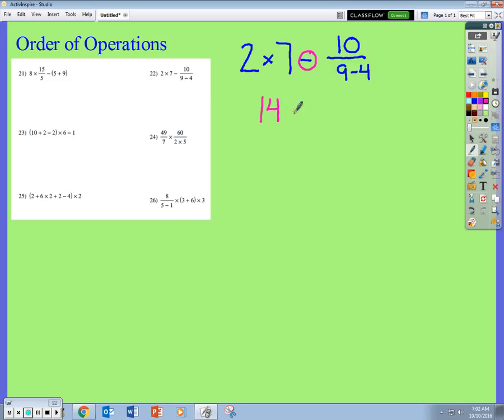So we have 2 times 7 is 14. Now the other side, I need to simplify a little bit. That's 10, but I can't divide 10 by 9 and 4. I need to simplify 9 minus 4. 9 minus 4 gives me 5.